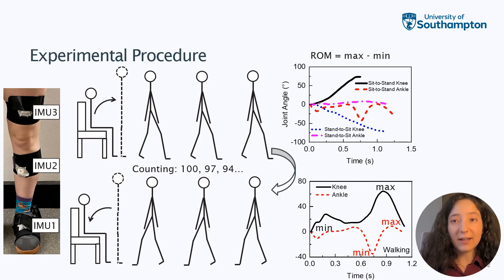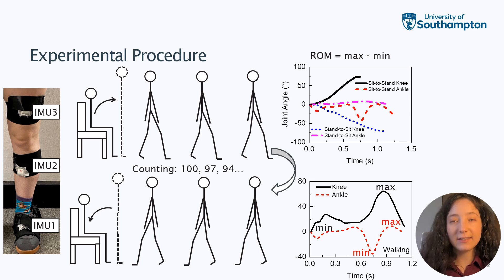Neurological disorders can cause lower limb dysfunction and increased fall risk. Risk assessment tests include the timed up and go, or TUG test, and the cognitive TUG test, or C-TUG test.